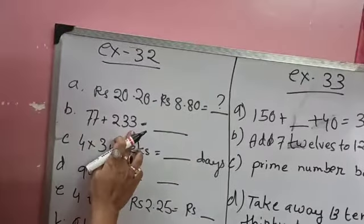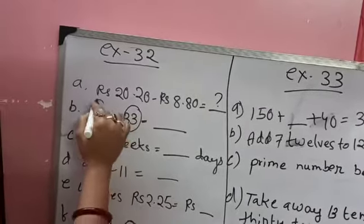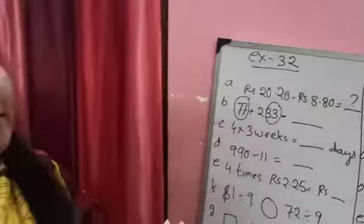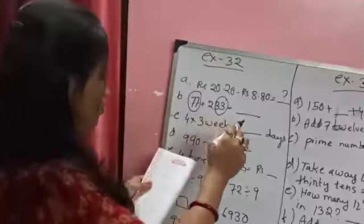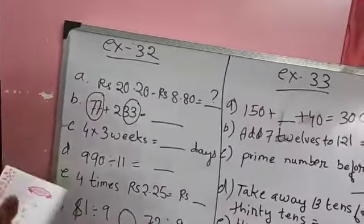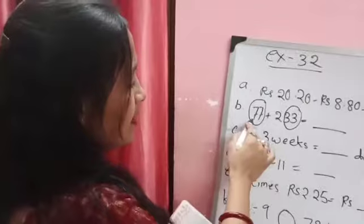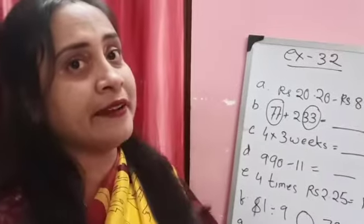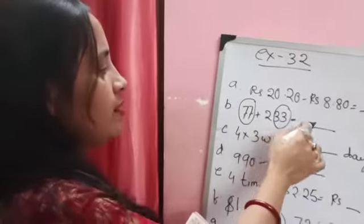77 plus 233. See, this 70 and 30 makes 100, and here is 7 and here is 3, means one more 10 is there. So 110. So 77 and 33 is 110. 110 plus 200 is how much? You have to give it over here.